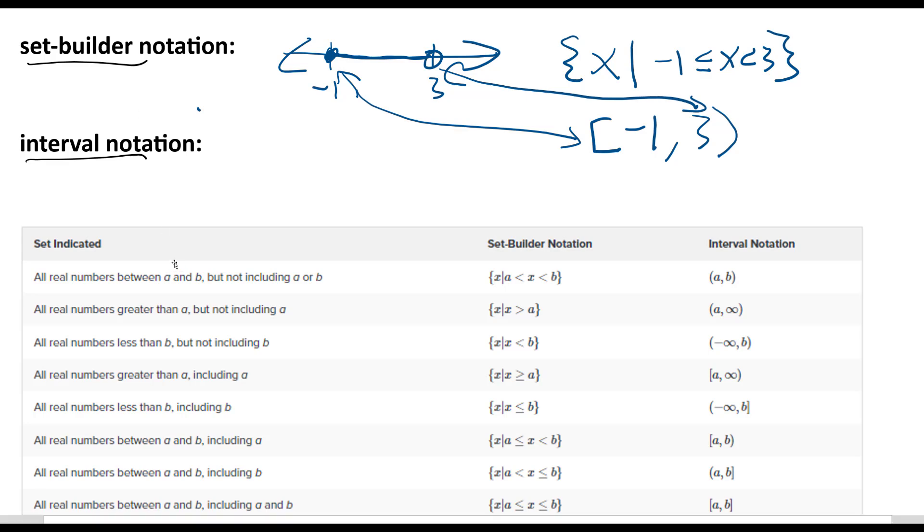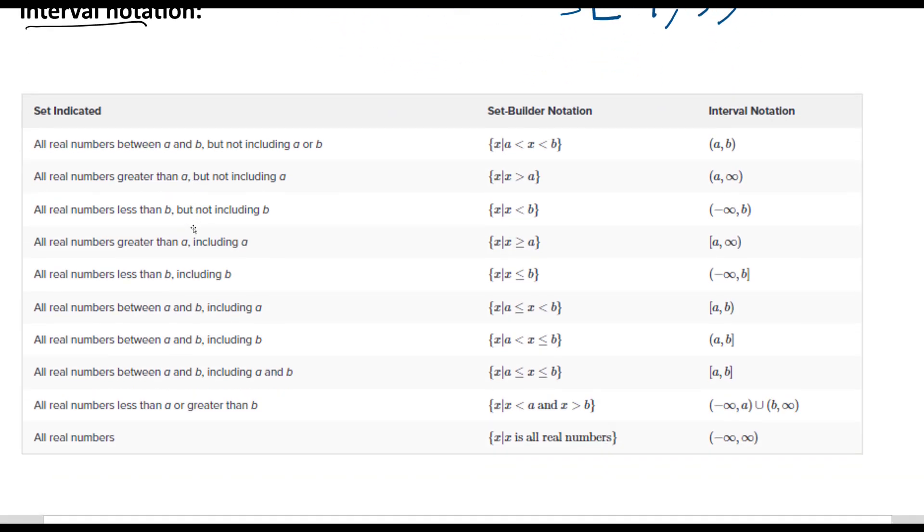And we see here in this chart - I just took this chart from the book, so you can look at that in the book if you want. I'm sure you've all read the book. Anyway, so for example, all real numbers between a and b, but not including a or b.